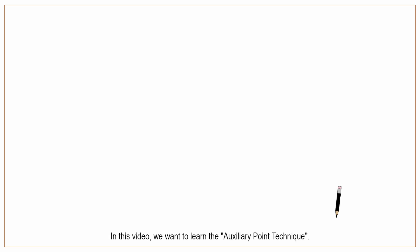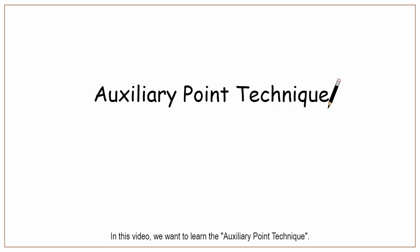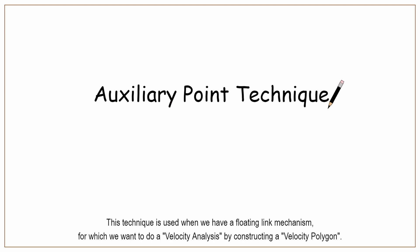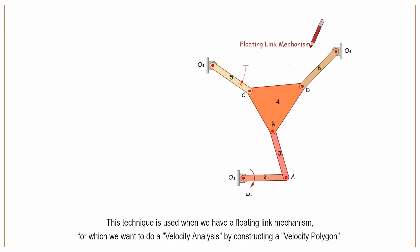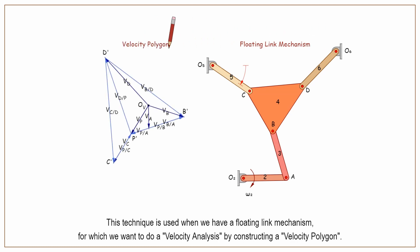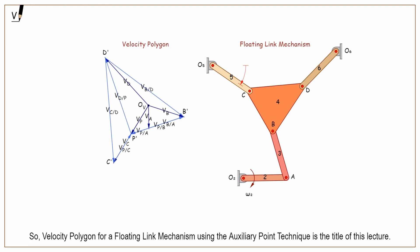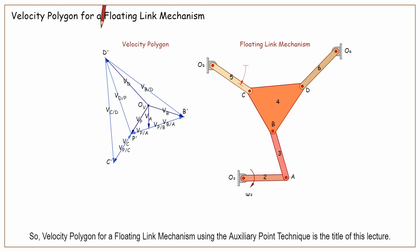In this video, we want to learn the auxiliary point technique. This technique is used when we have a floating link mechanism for which we want to do a velocity analysis by constructing a velocity polygon. Velocity polygon for a floating link mechanism using the auxiliary point technique is the title of this lecture.